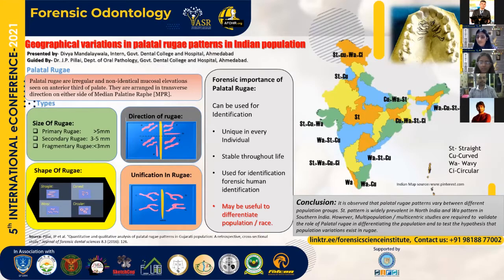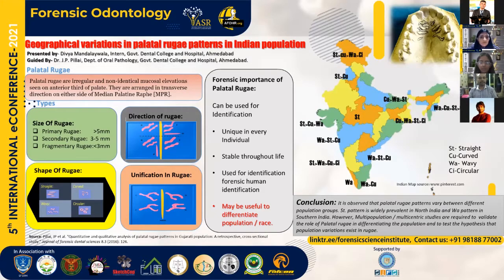We can determine the direction of palatal rugae as reverse, forward, perpendicular, and horizontal. As we can see here, H is defined as horizontal, P areas are the perpendicular rugae, F ones are the forward rugae, and the B ones are the backward rugae. Backward rugae make a negative angle with the mid-palatal raphe, and the forward ones make a positive angle.